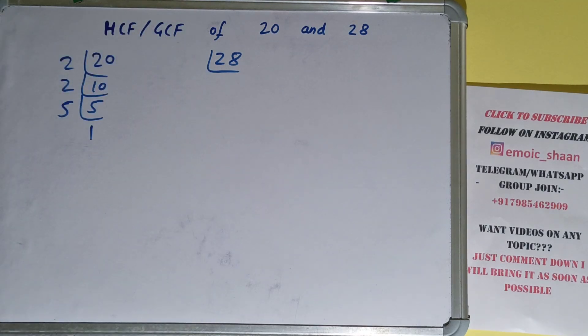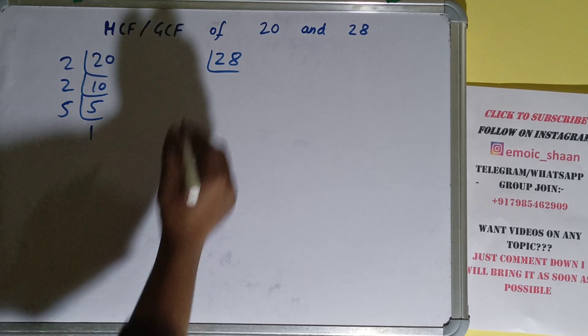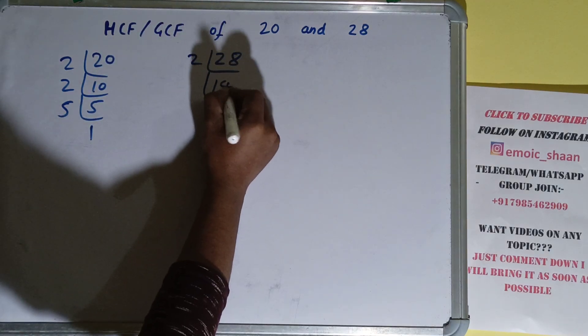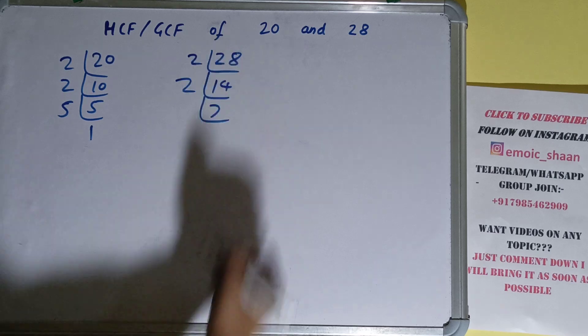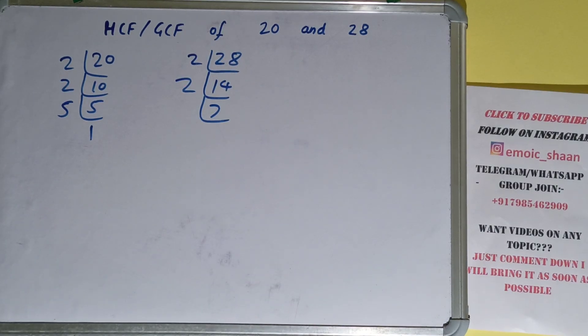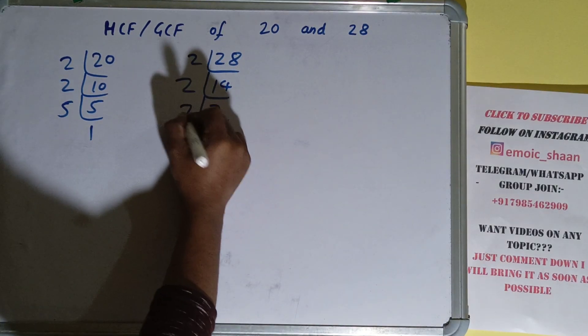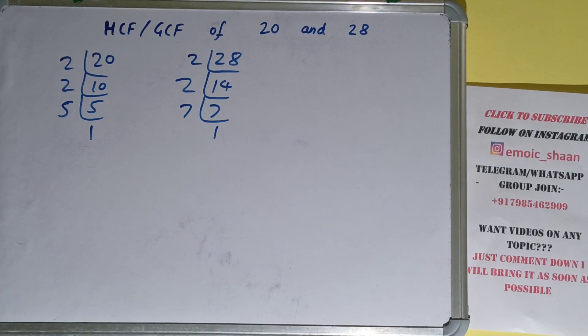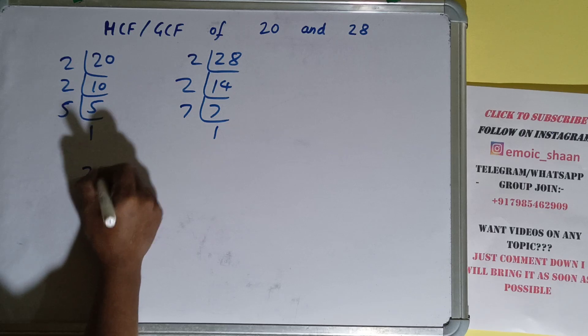Now we need to do the same with the number 28. Is 28 divisible by 2? Yes, and we'll have 14. Is 14 divisible by 2? Yes, and we'll have 7. Is 7 divisible by 2? No, 7 is a prime number, so it's only divisible by itself and we'll have 1. So we're done with the prime factorization step.